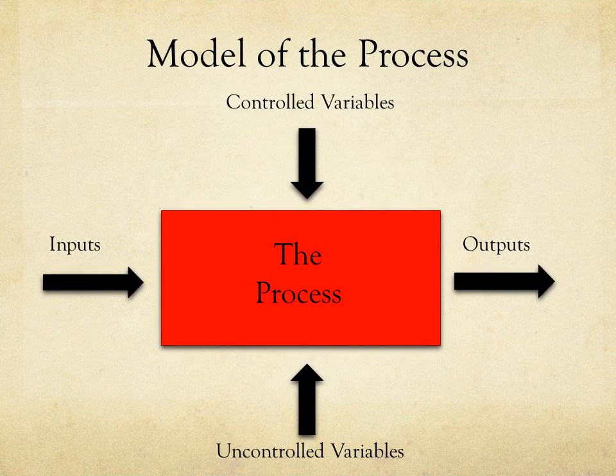Our experiment is shown in the red box below marked 'The Process.' Our experiment has inputs, which are the weight of the airplane with the pennies and the length of the paper that the plane was made out of, while the output is the flight distance after thrown.